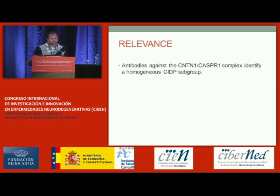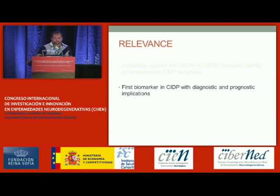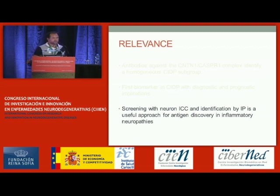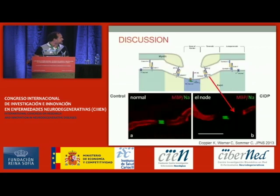What is the relevance of these findings? The antibodies against the contactin complex identify a homogeneous CIDP subgroup. These autoantibodies are the first biomarker in CIDP with diagnostic and prognostic implications. And the screening technique using neuron immunocytochemistry and identification of antigens by immunoprecipitation proves to be a useful approach for antigen discovery in inflammatory neuropathies. We know these autoantibodies are specific and can be useful clinically, but we don't yet know if they are pathogenic.